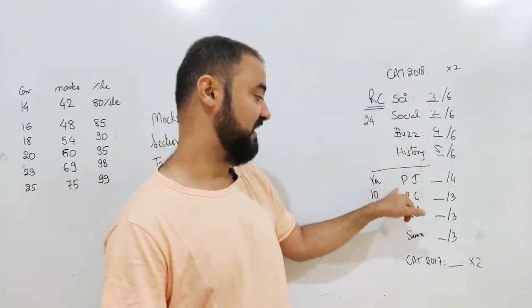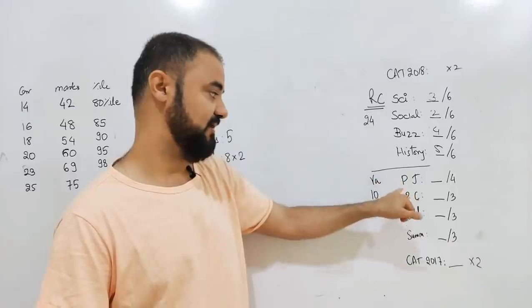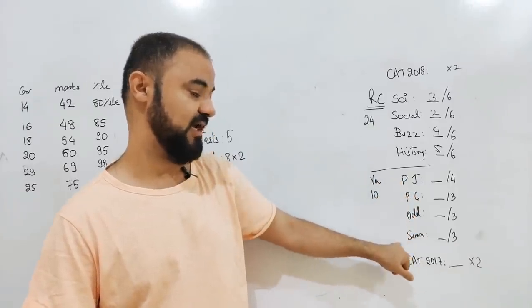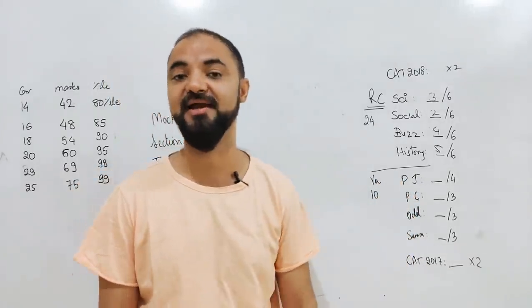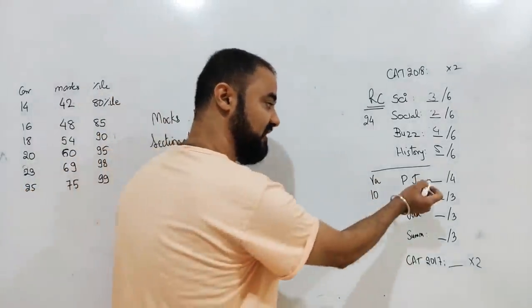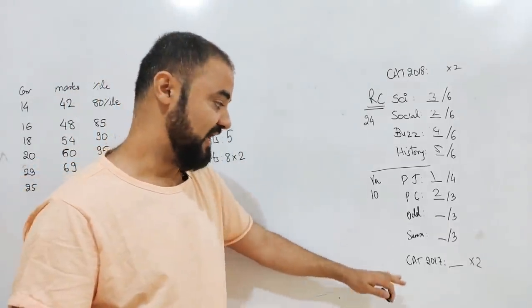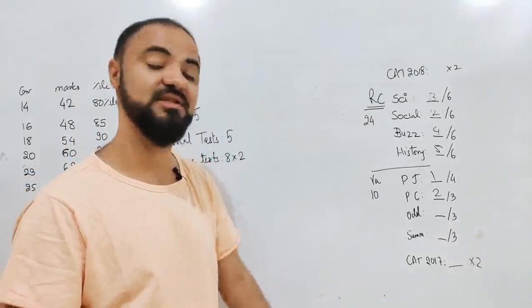Next day, para jumble, para completion, odd man out, and summary-based. All these four topics combined is going to be 10 marks. I want to find your accuracy in this area, whether you're doing one right or two right or no right.